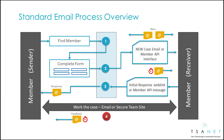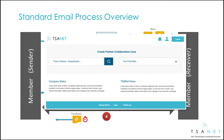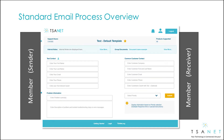Let's take a look at the end-to-end process to better understand how TSA-NET Connect works. First, the sender logs into TSA-NET Connect and finds a partner. They fill out their process form, select a priority, and hit Submit.